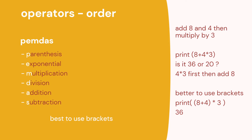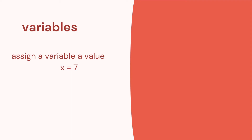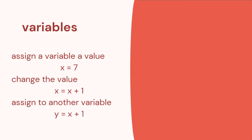Let's look at variables. You assign a value to a variable — in Python you use the single equal sign. So here x is the variable and we give it the value seven. We can change that value: x equals x plus 1 means x starts at 7 and changes to 8. We can also assign that to another variable: if x is 8 and we add 1 to get 9, then y would equal 9. Examples: x equals 7, age equals 21, name equals 'Dr. Cody'.